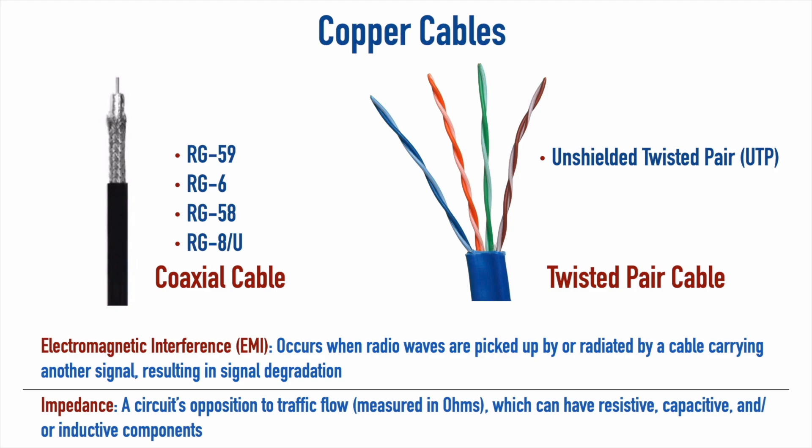In environments with a lot of interference, or when we want higher speeds on the order of 10 or 40 gigabits per second on twisted pair cabling, we might use shielded twisted pair. Shielding can come in a couple of forms: foil is often wrapped around each individual pair of wires, and then there may also be braiding — much like in coaxial cable — surrounding all eight conductors in the twisted pair cable.